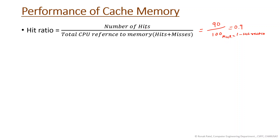So 90 times it's a hit, and the remaining 100 minus 90 — that is 10 times — is called a miss. Out of 100 references, 10 times data is not found in cache, and for that it accesses main memory. You can see that 0.9 hit ratio is practically observed, and it proves the concept of locality of reference — meaning some specific memory location is accessed more frequently.